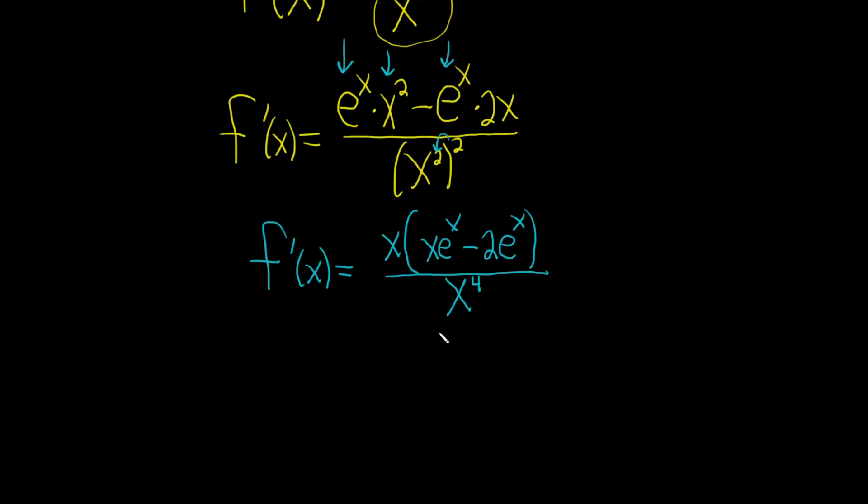It looks like we're going to be able to cancel one of the x's. So f prime of x is equal to, let's see, we lose a copy of x. So we have x e to the x minus 2e to the x over x cubed. And that should be the final answer.